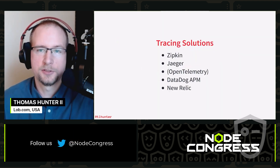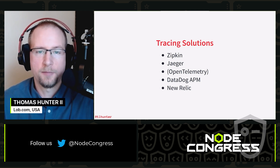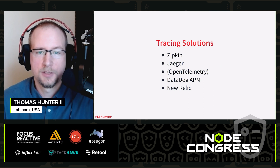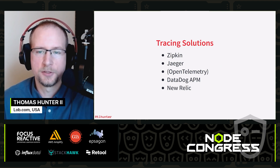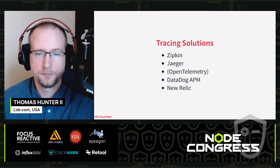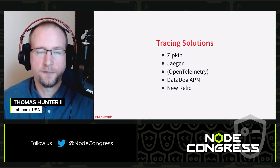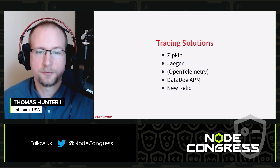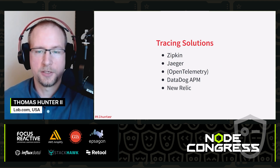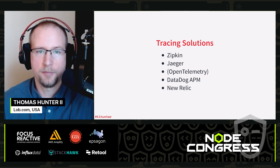There are a few different tracing solutions. The one we just looked at is Zipkin. Another popular open-source alternative is Jaeger — both can be run self-hosted and both follow the OpenTelemetry specification, which defines headers passed around, timing information tracked, and how data is sent to the central server. The Datadog company also has an APM product, and New Relic is another popular tracing solution.